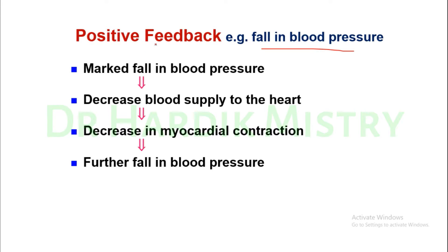In the positive feedback loop: once there is a marked fall in blood pressure, there is decreased blood supply to the heart. This leads to decreased myocardial contraction. Decreased myocardial contraction causes a further fall in blood pressure, because the heart is not able to pump enough blood to the body or even to the heart itself. A vicious cycle occurs — this is the positive feedback loop.